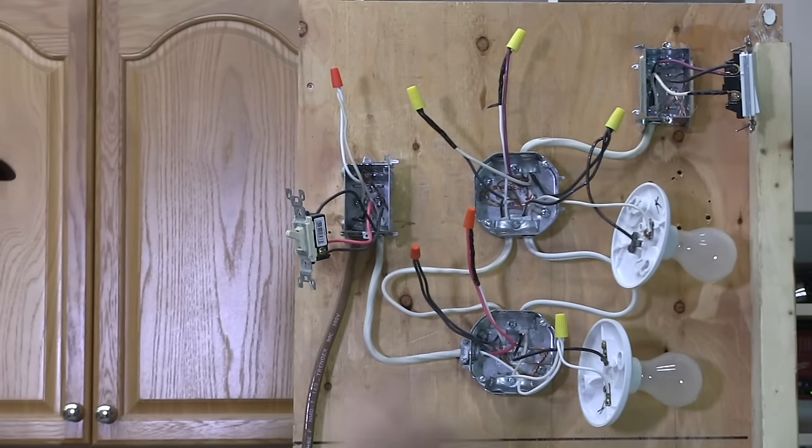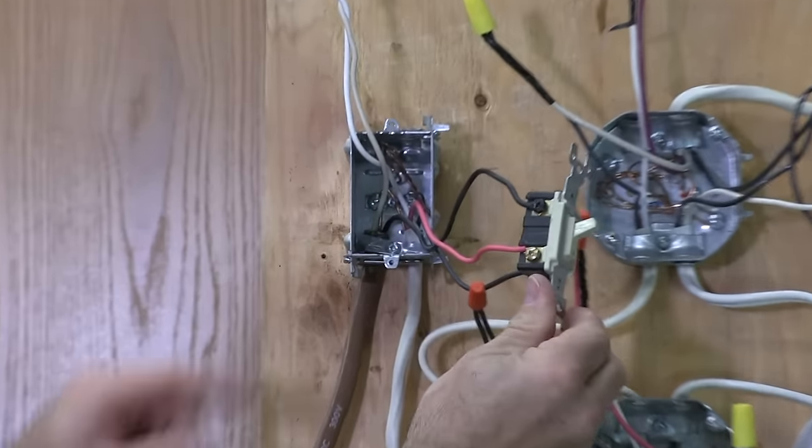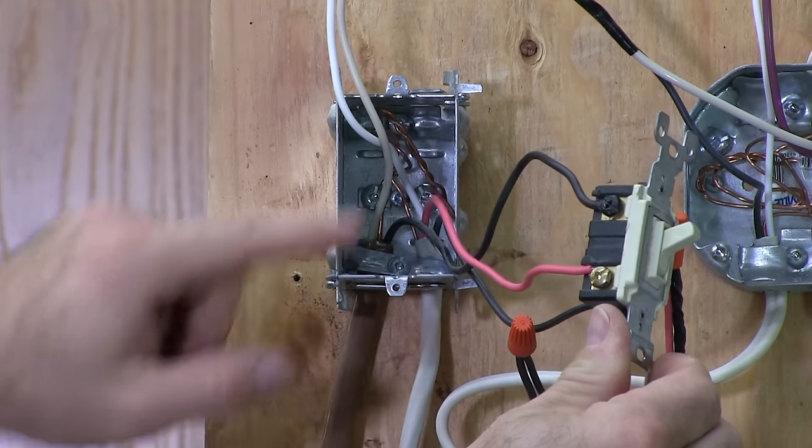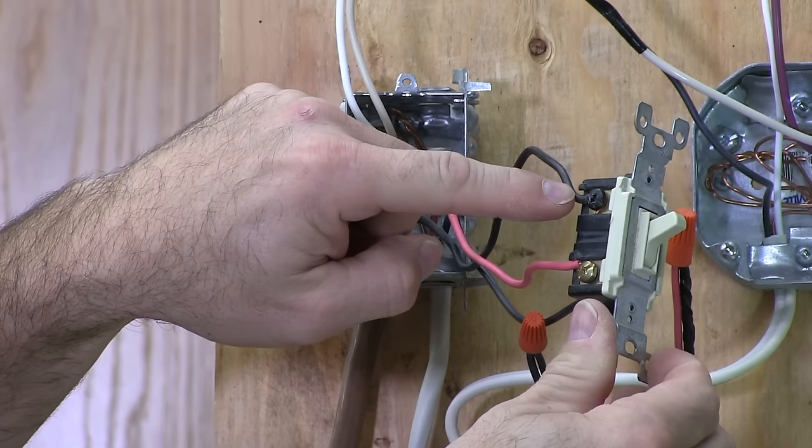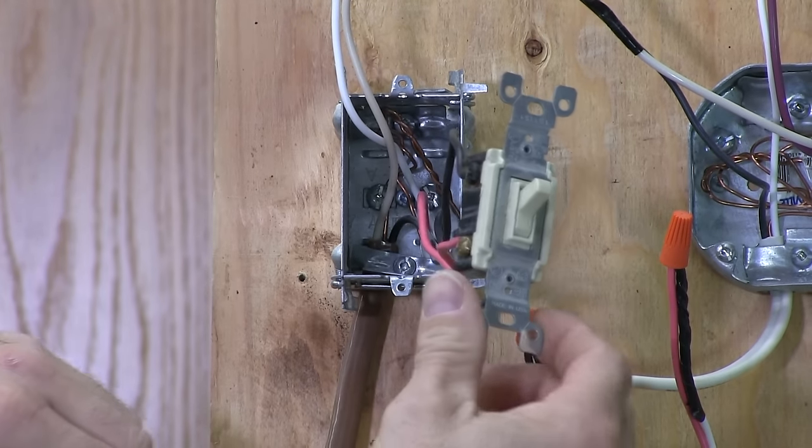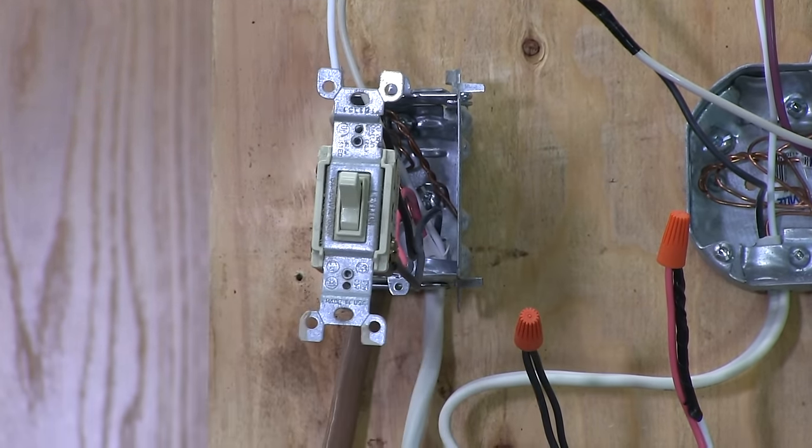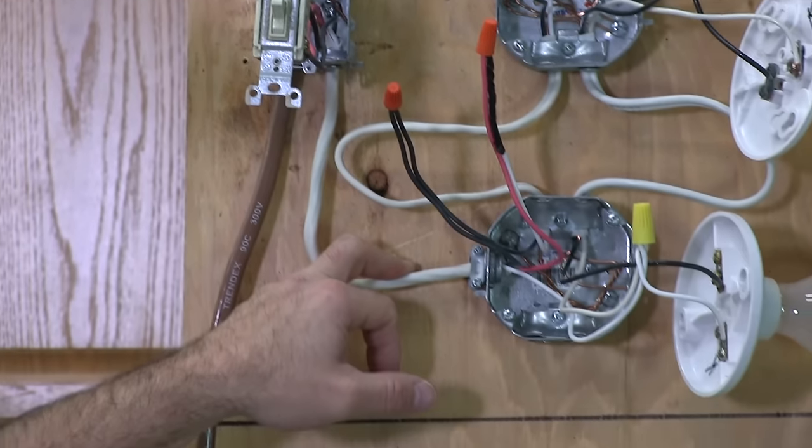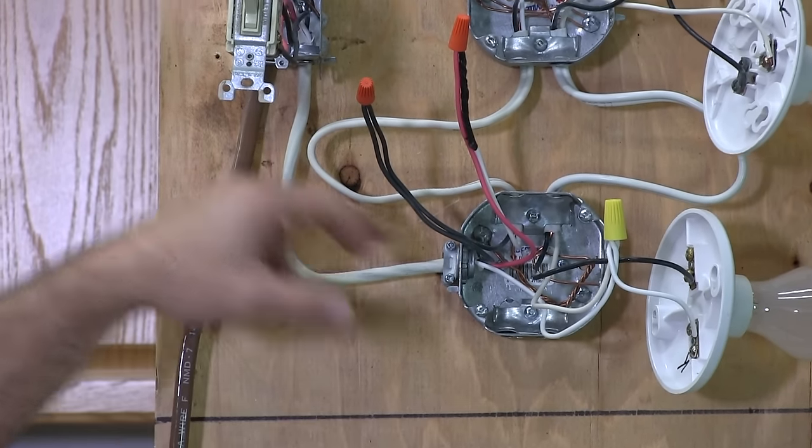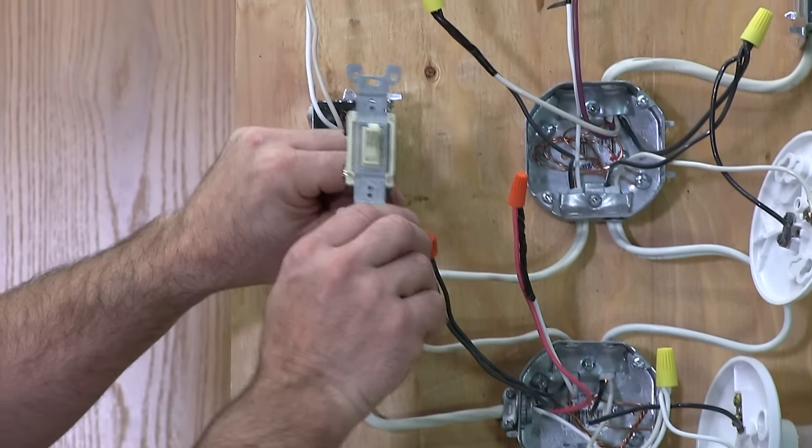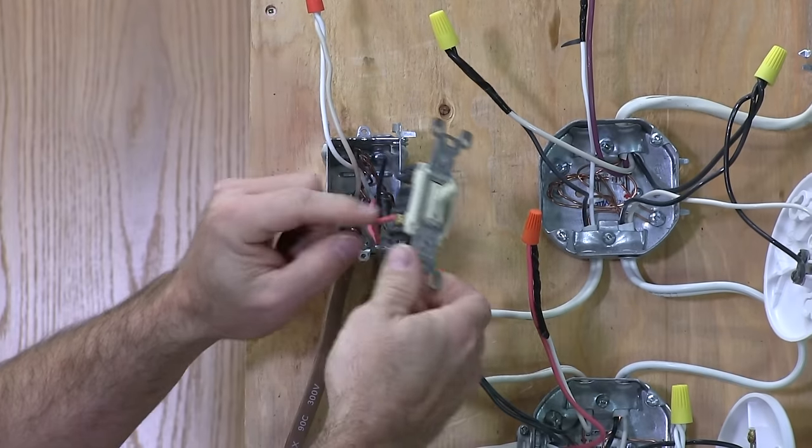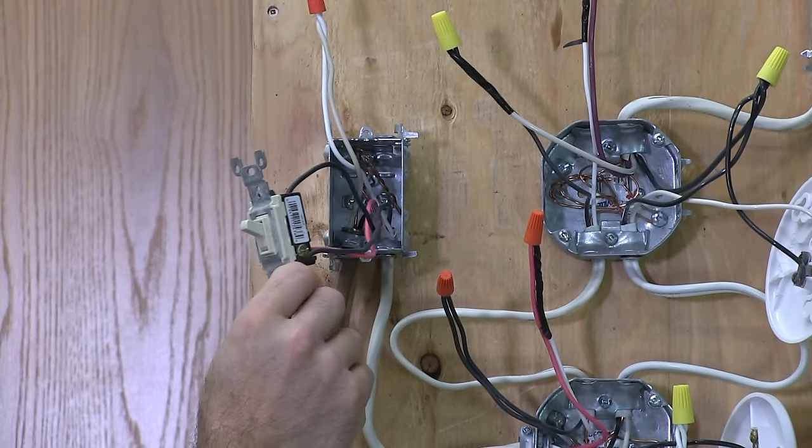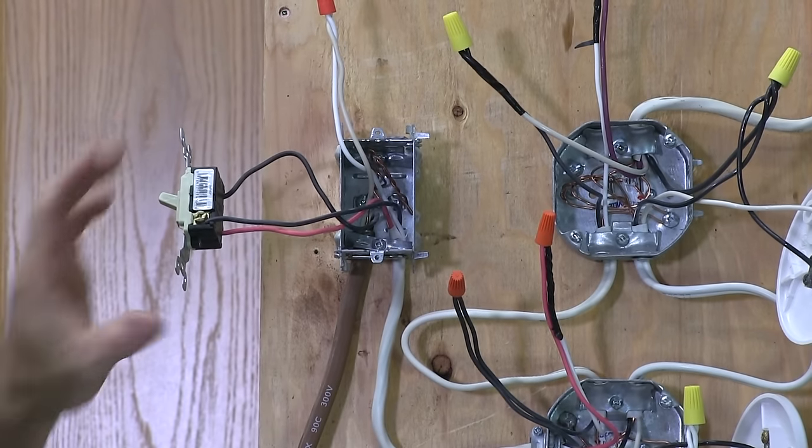Here we've got power coming into our first switch with a 14-2. Just like our other setup, we've got the hot wire, the black wire from the power supply going to the common screw, and this is a three-way switch. From this switch, going to the first light is going to be a 14-3. Up at this end, we've got a red and a black, and they're both hooked to the gold screws. So that looks after that switch.